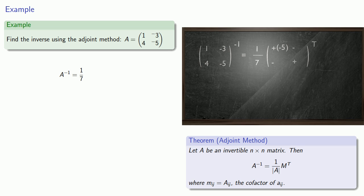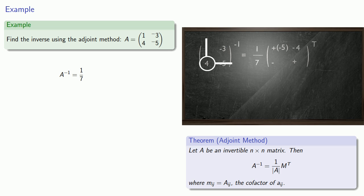For the first row, second column entry, we'll cross out that row and column, and the minor will be the determinant of what's left over: 4. For the second row, first column, we'll cross out that row and column, and the minor will be the determinant of what's left over: negative 3.